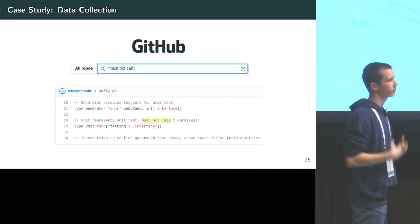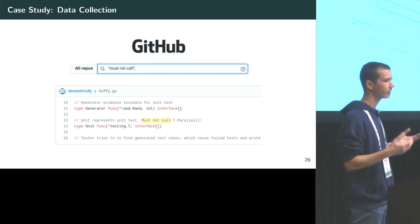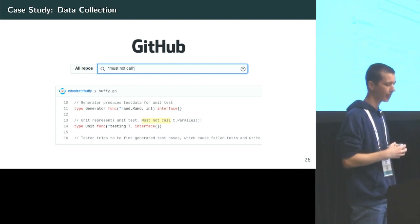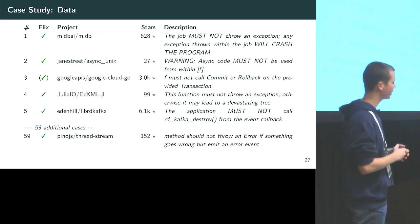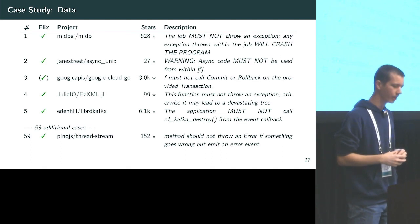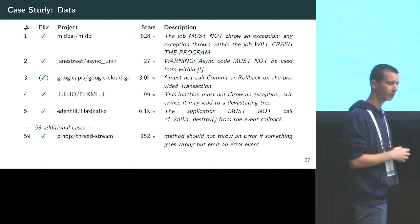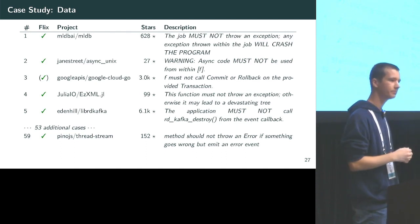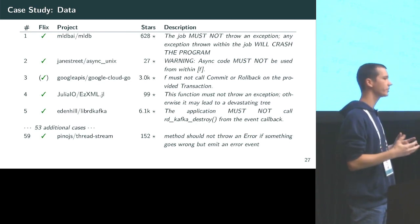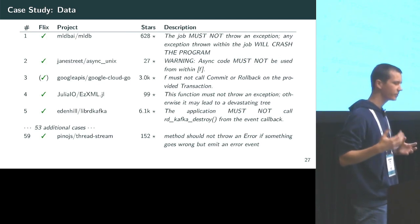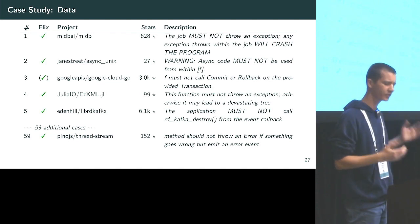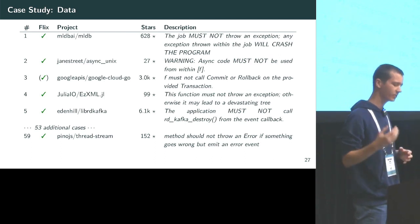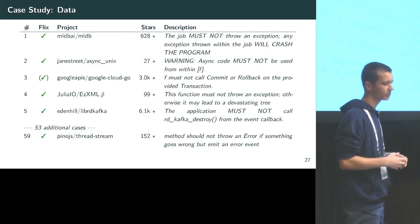For the case studies we first performed data collection, searching GitHub code search for terms such as 'must not call', 'must not throw', 'must not raise', and similar phrases expressing effect exclusion. We collected a large table of examples. For instance, the ML DBI AI system says the job must not throw an exception — any exception thrown within the job will crash the program. Notably, not only are these constraints common, but the authors seem very passionate: there are capital letters, exclamation points, and in some cases vague threats.